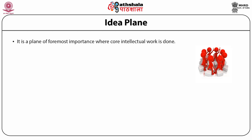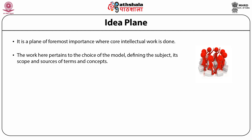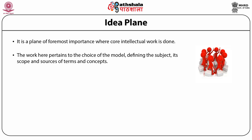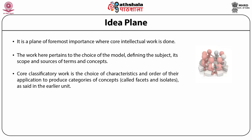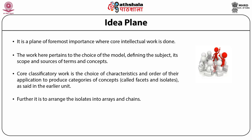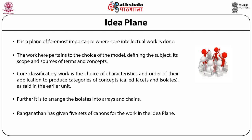The Idea Plane is the first plane of work. It is the plane of foremost importance where the core intellectual work is done. It is a blueprint and a thinking plane. The work here pertains to the choice of model, defining the subject, its scope, and sources of terms and concepts — that is, the literature from where we collect terms. The core classificatory work is the choice of characteristics and order of their application to produce categories of concepts called facets and isolates. Further, it is to arrange the isolates into arrays and chains, to make a systematic network of concepts — that is, to map them. Ranganathan has given five sets of canons for the work in the idea plane.